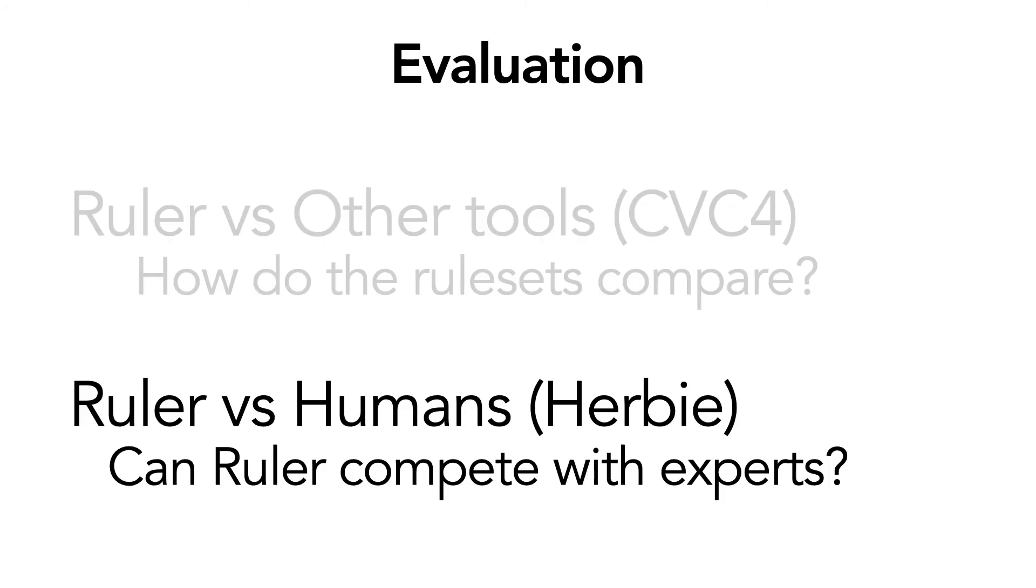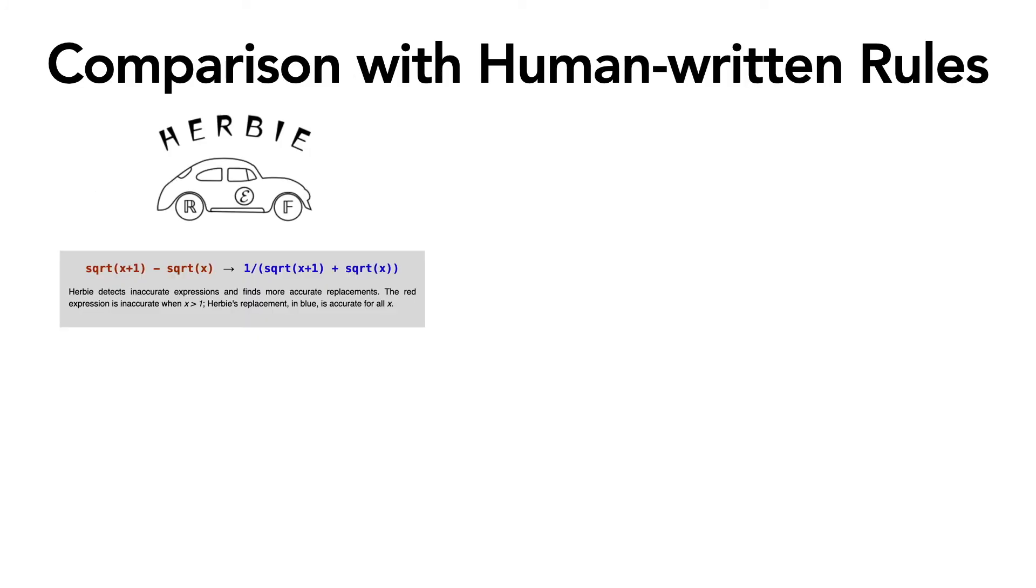Next, we want to compare Ruler with human written rules. For this we chose the Herbie tool. So Herbie is a tool that automatically improves the accuracy of numerical expressions. It was first published at PLDI in 2015, where it won a Best Paper Award, and since then it has been used by various organizations including NASA, Sandia National Labs, and so on. Herbie is interesting for us because it relies on rewrite rules for finding equivalent, potentially more accurate expressions.